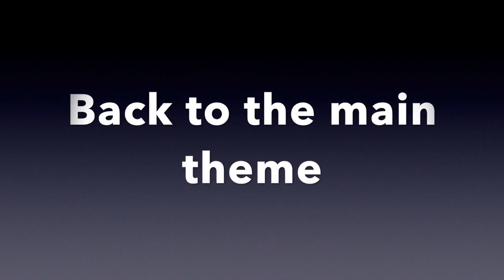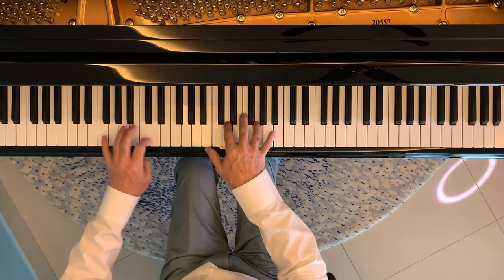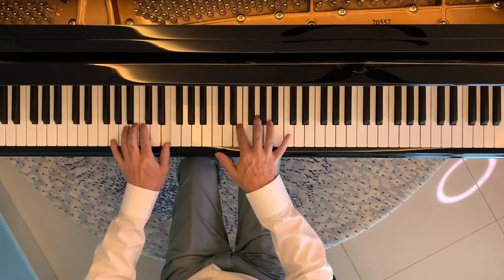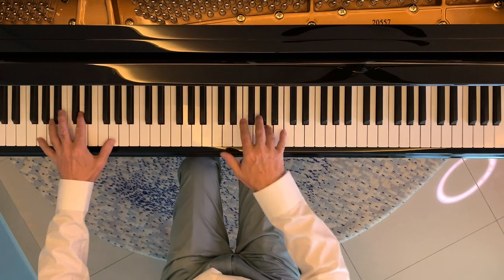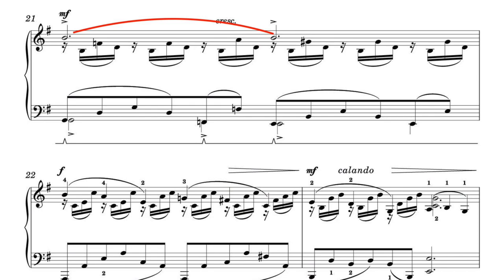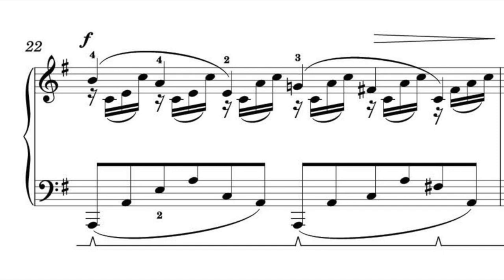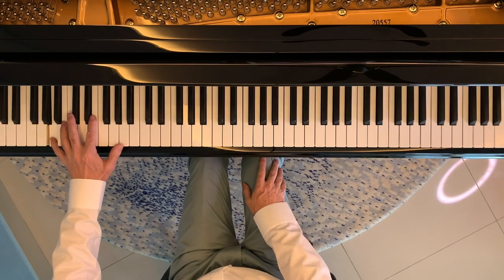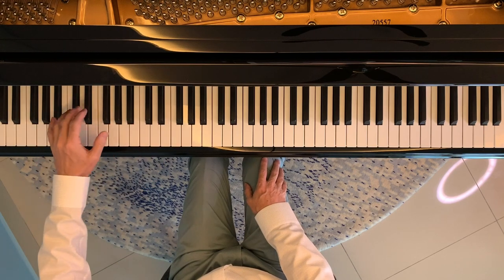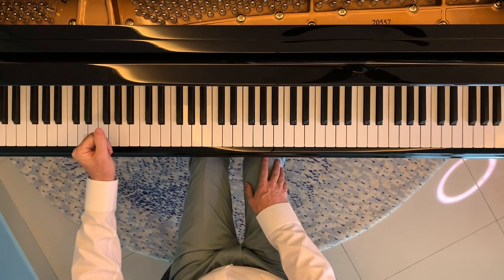The main theme returns and takes us through to bar 21, from where we start to move towards the close. Notice in bar 21 that the B natural is actually repeated and accented. In the original cello part this is a held note, however the piano doesn't sustain for that long, and given there's a crescendo Silotti has opted to repeat the note. As we move towards the end from bar 22, note the modification in the left hand pattern — after the broken octave we use first 2-1-4 and then 4-1-2. Make a mental note of this difference as it will help you when you come to play it.